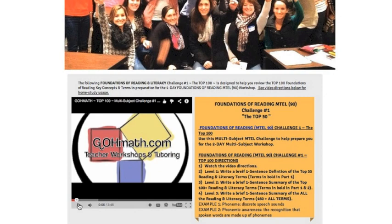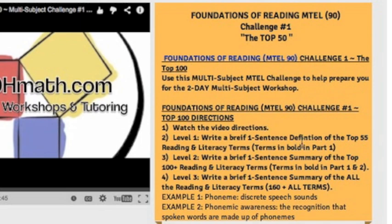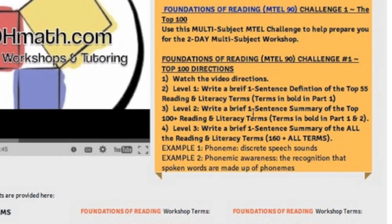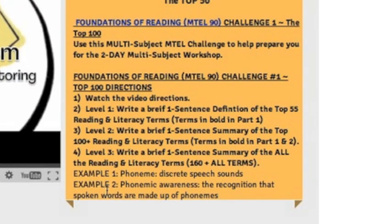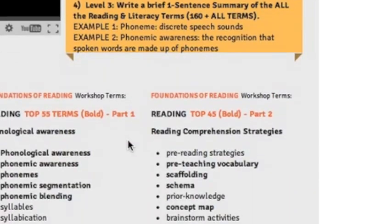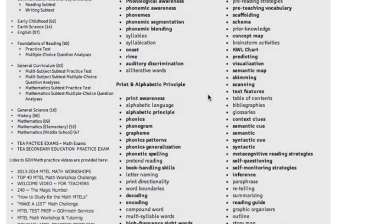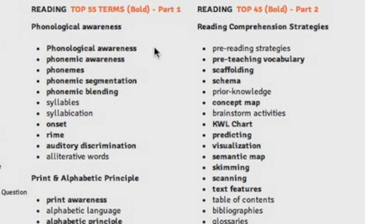You're going to see a few things as you scroll down the page. You're going to see this instruction video and then you're going to see written directions. Now I'm obviously going to want you to watch this video. The second thing is I'm going to want you to do these steps — it asks you to look at the top 100 key concepts for the Foundations of Reading. I'm going to scroll down the page and you're going to see them in these two columns. The terms that are bolded, like phonological awareness and phonemic awareness, are really core ideas that you have to have a clear understanding of.